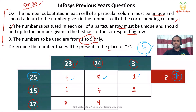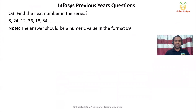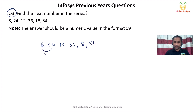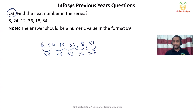Question 3: find the next number in the series — 8, 24, 12, 36, 18, 54. The pattern is: multiply by 3, then divide by 2, then multiply by 3, then divide by 2, and so on. So 54 ÷ 2 = 27. The answer is 27.